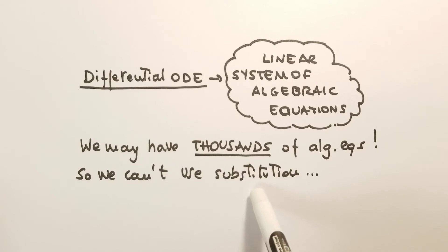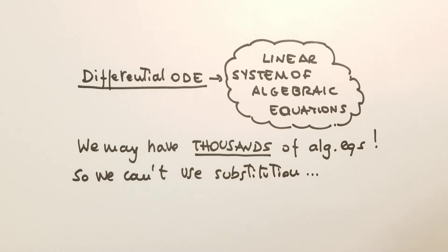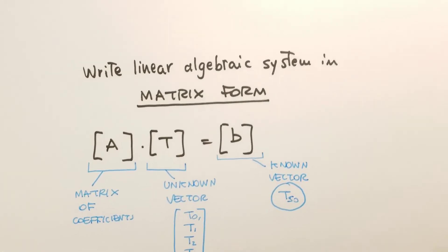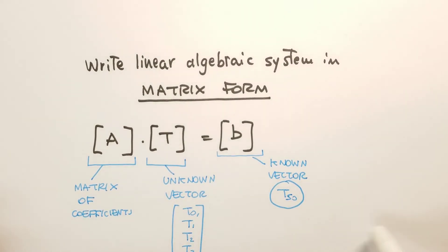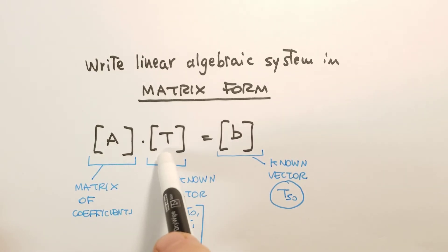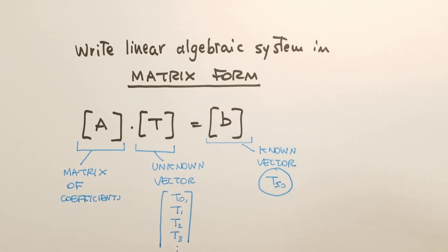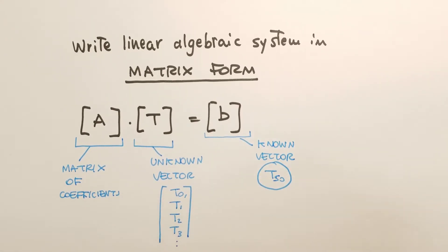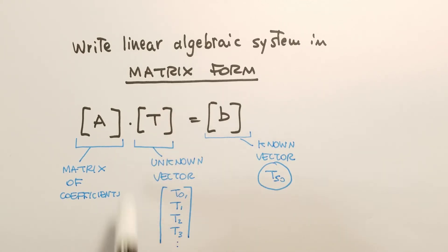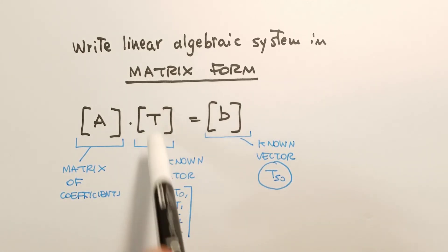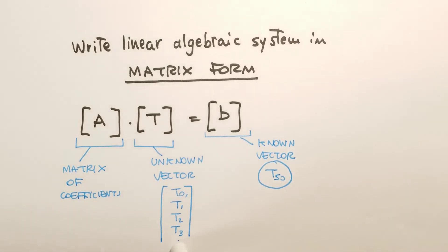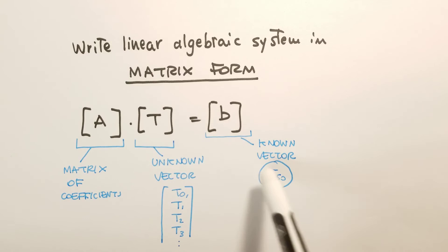We have a system of linked algebraic equations, and we can have thousands of them. The more grid points we use — the larger capital M — the more equations we have to solve. We write the algebraic system in matrix form: matrix A multiplied by vector T equals vector B. Matrix A is the matrix of coefficients (known), T is the unknown vector containing the temperature at each point, and B is also known.